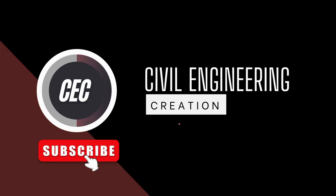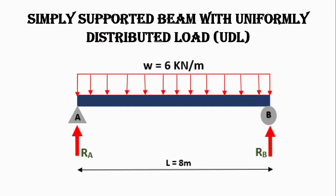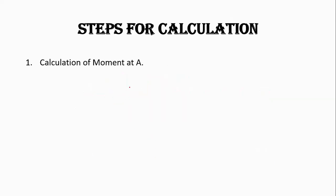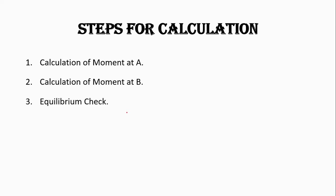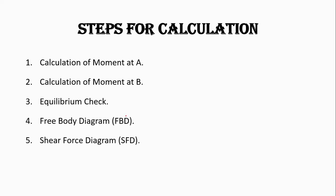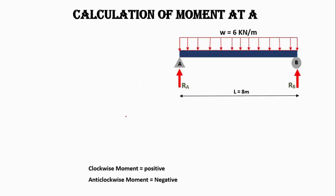Welcome to my YouTube channel Civil Engineering Creation. Today we will find the support reactions of a simply supported beam with uniformly distributed load. We have a beam AB of 8 meters with a uniformly distributed load of 6 kilonewton per meter acting on 8 meters. We will calculate the moment at point A, then at point B, perform an equilibrium check, and draw the free body diagram, bending moment diagram, and shear force diagram.